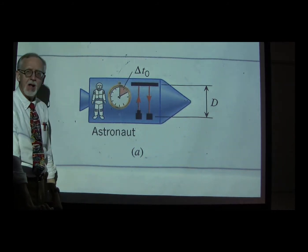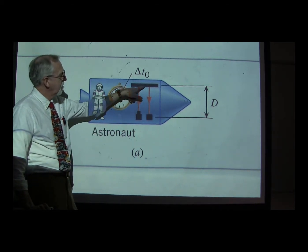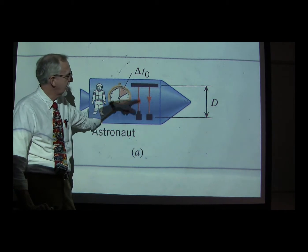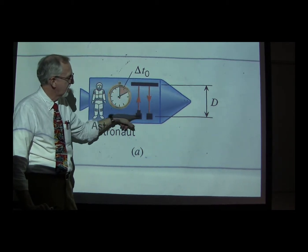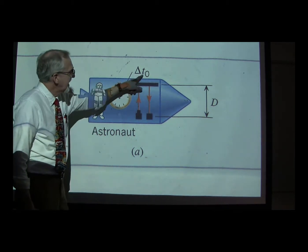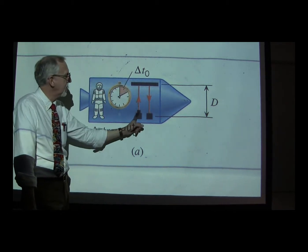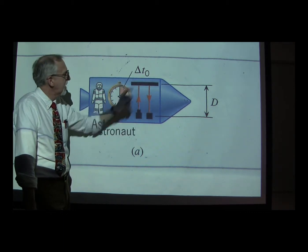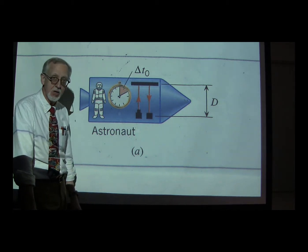So the clock works like this: it emits light — tick — it reflects back, is received — tock. Tick, tock, tick, tock, something like that. Let's say that the time it takes between the emission and the reception is some amount of time we'll call delta T sub O, or delta T naught.